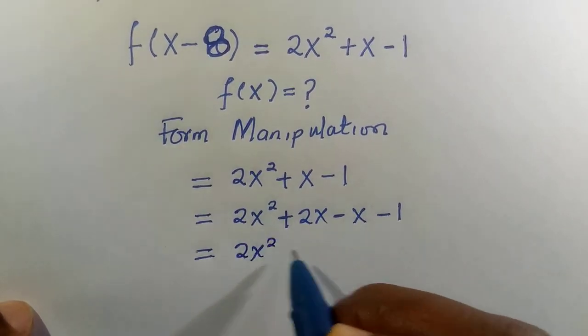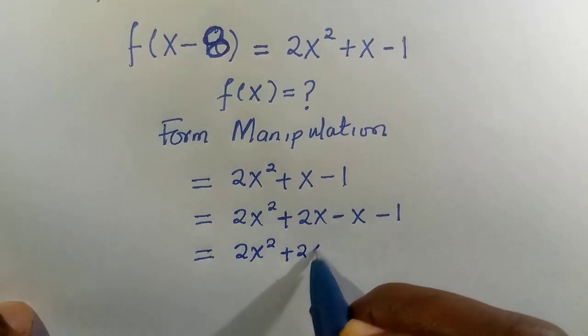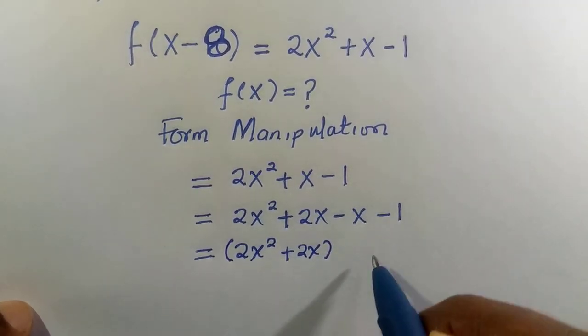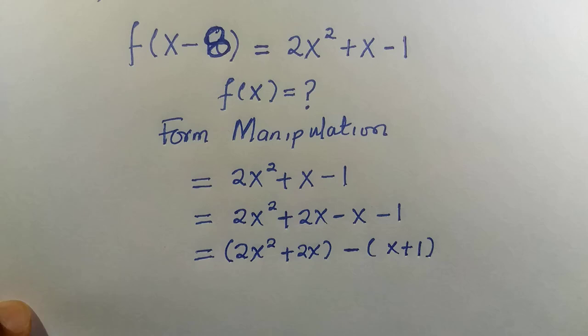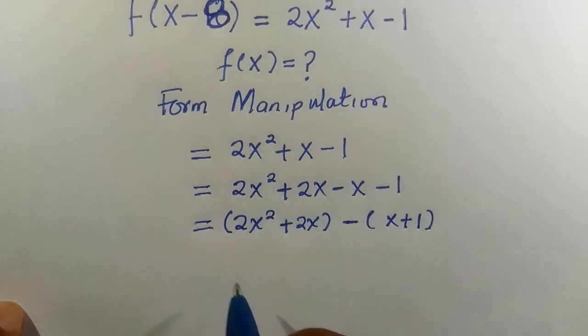By grouping, we have 2x² + 2x in brackets minus (x + 1). Next, 2x is common.